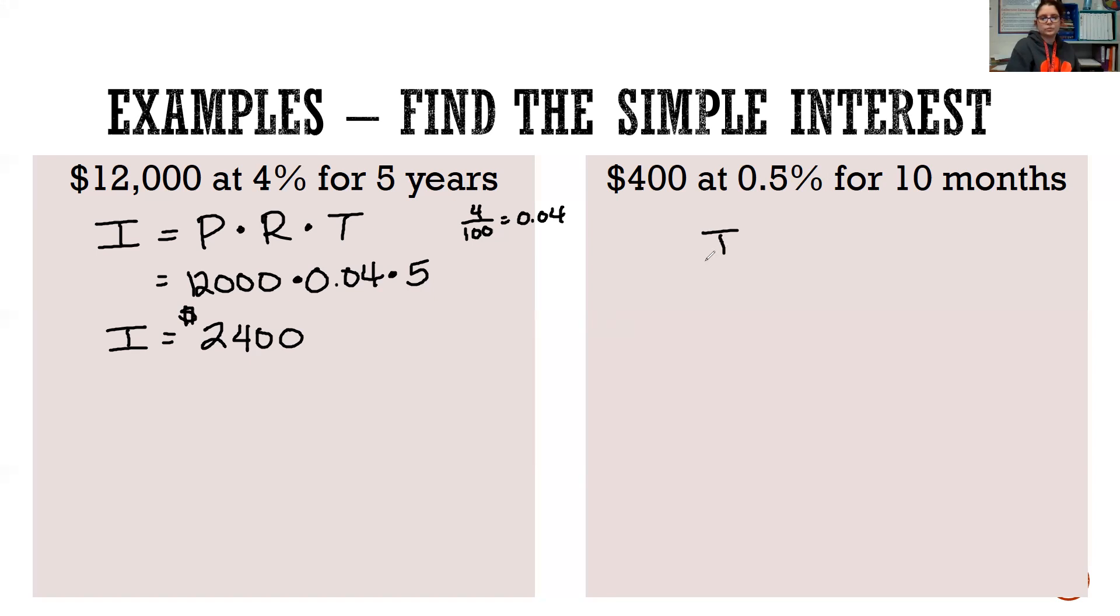Our next example, let's say we're borrowing $400 at a 0.5% rate for 10 months. There's two things we have to do. We have to turn our percent into a decimal. So 0.5 divided by 100 would give us 0.005.